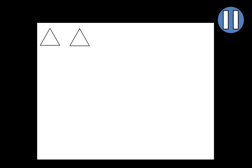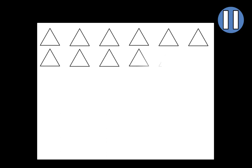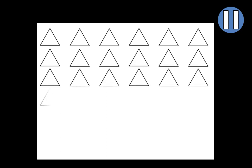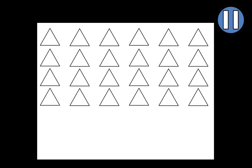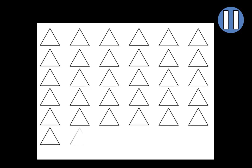We'll begin by drawing six triangles across the top. Draw the first triangle in this corner, draw the second one here, the third triangle here, the fourth triangle here, the fifth triangle here, and the sixth triangle here. Remember to pause the video whenever you want more time. You'll draw a second row of triangles, a third row, a fourth row, a fifth row, and a sixth row. Go ahead and pause the video now until you have finished drawing your triangles.